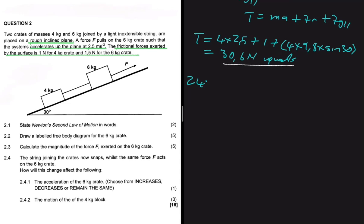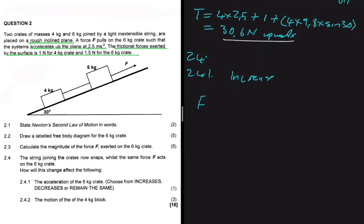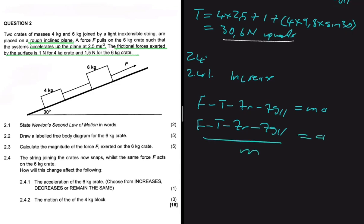Question 2.4: the string joining the crates snaps while the same force F acts on the 6 kg crate. How does this affect the acceleration of the 6 kg crate? The acceleration is going to increase. For the 6 kg block, acceleration equals (F minus tension minus frictional force minus fg parallel) divided by m. If the string snaps, we no longer subtract the tension, so the numerator increases. With the denominator staying the same, we get a larger overall value — the acceleration increases.